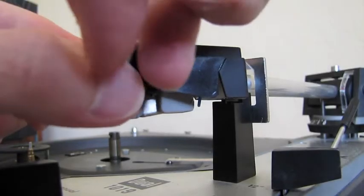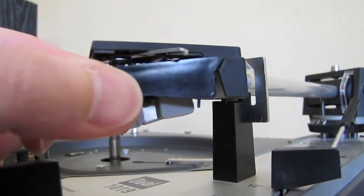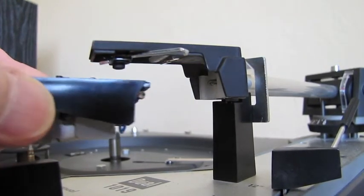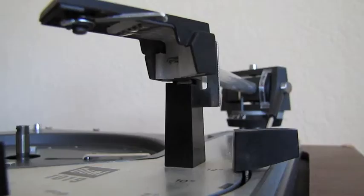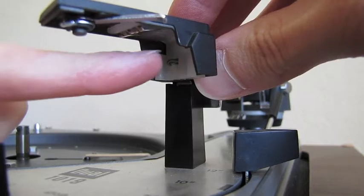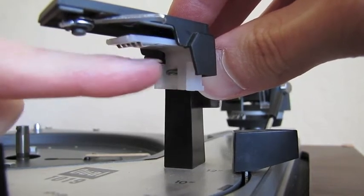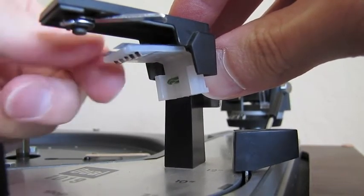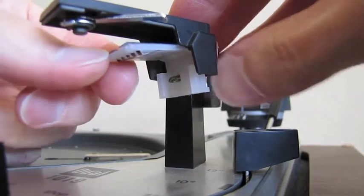Remove the head shell from the tonearm without damaging the stylus. Remove the white plastic base from the tonearm by sliding it down. Do this gently because the tonearm wires are attached to it.